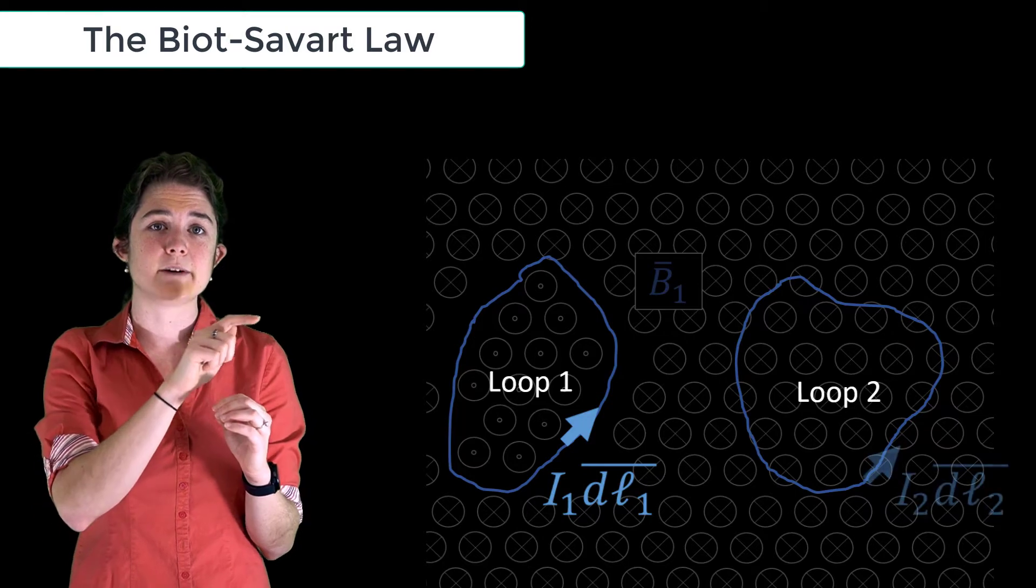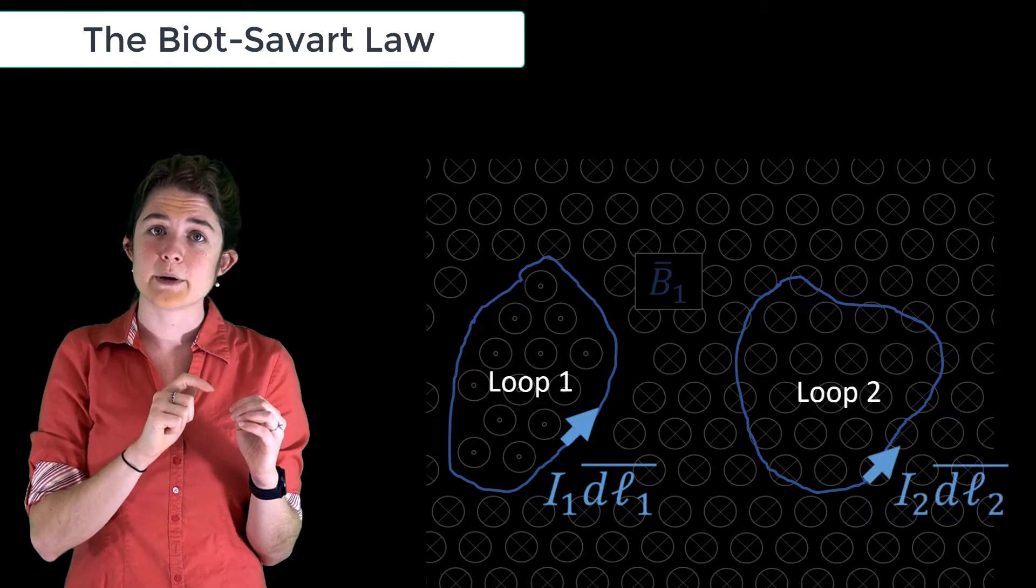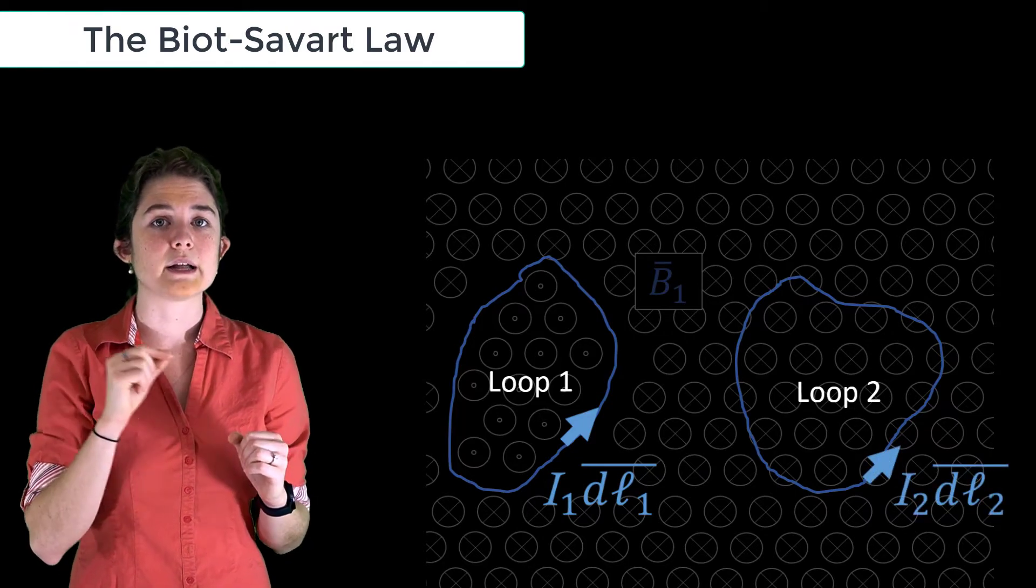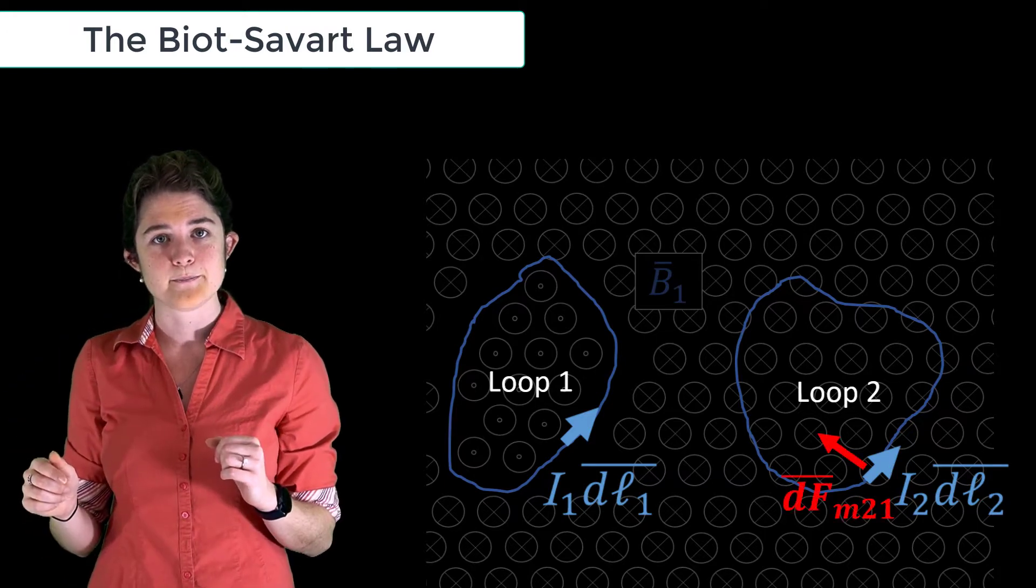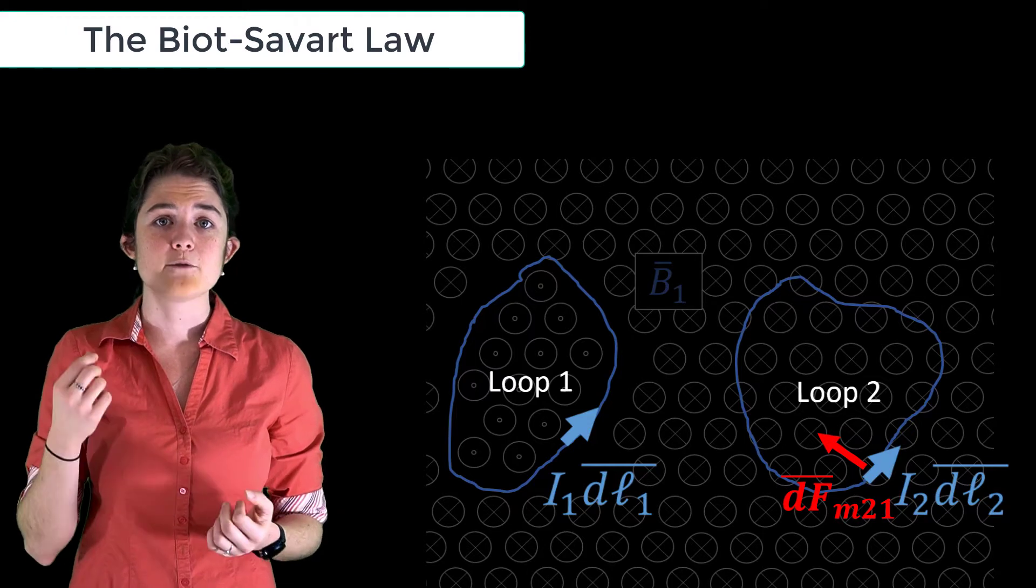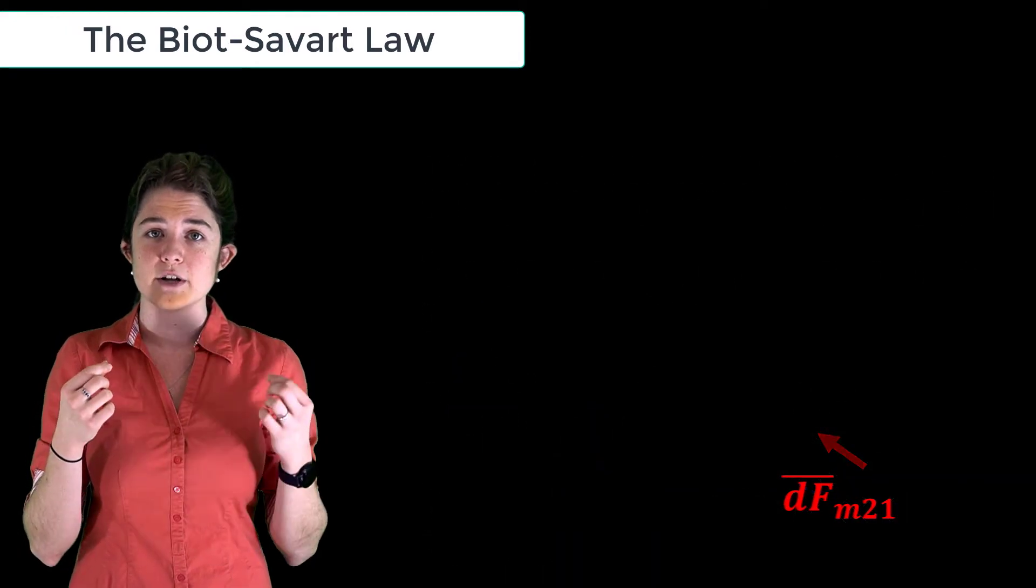If a second time-invariant current flows around the second loop, this second current will experience a force due to the magnetic field of the first loop. It has been experimentally shown that the force experienced by a differential element of the second current loop is given by this equation.